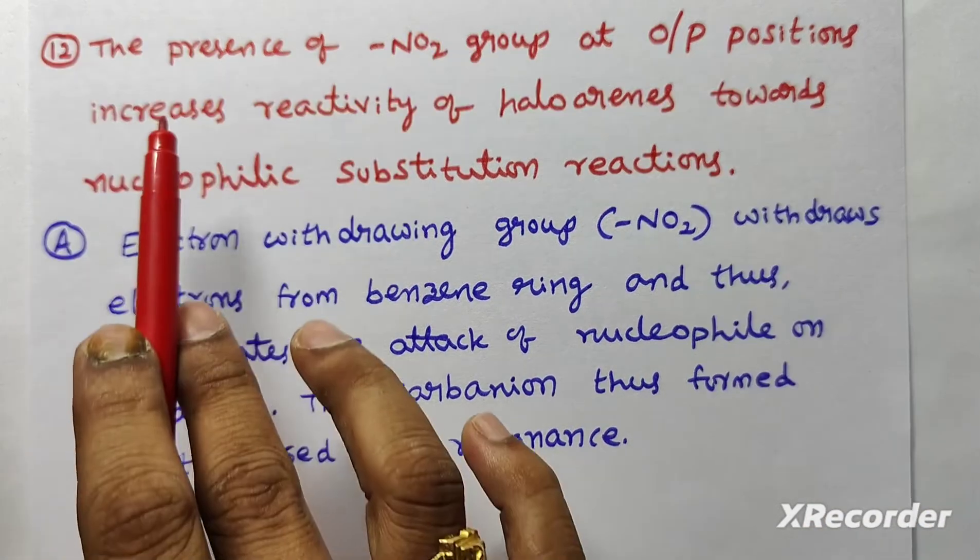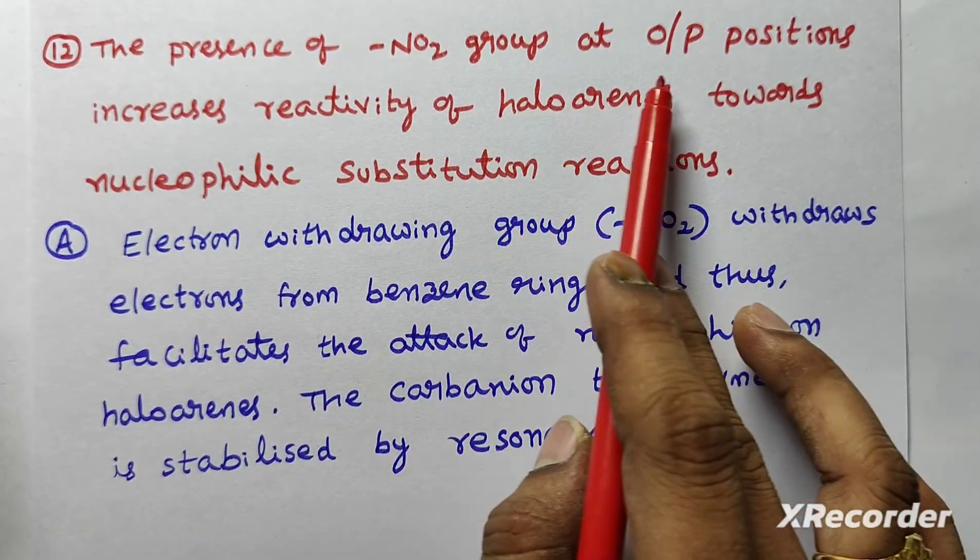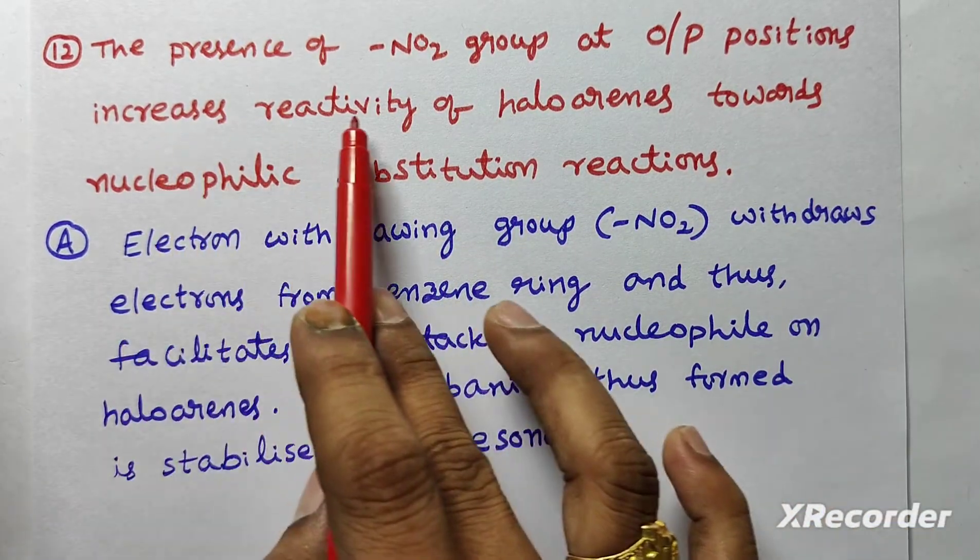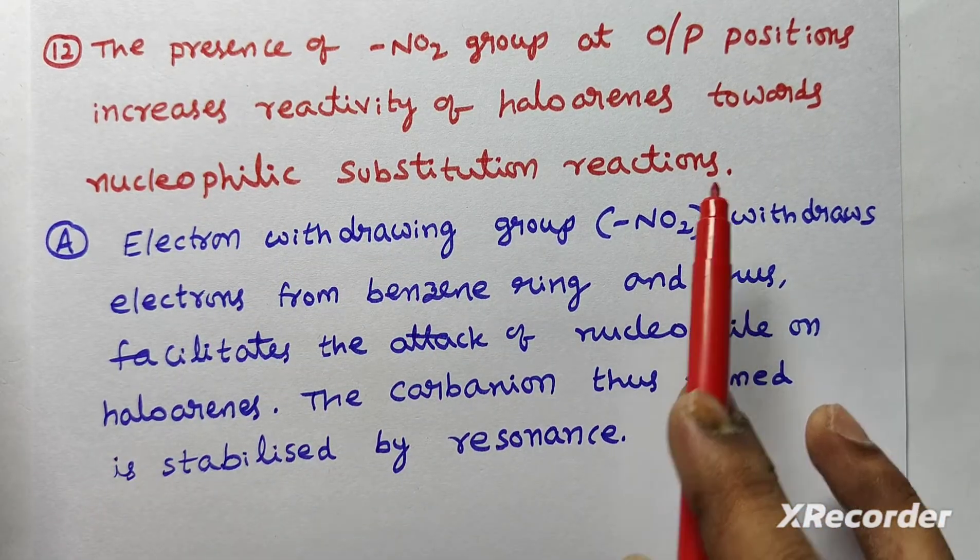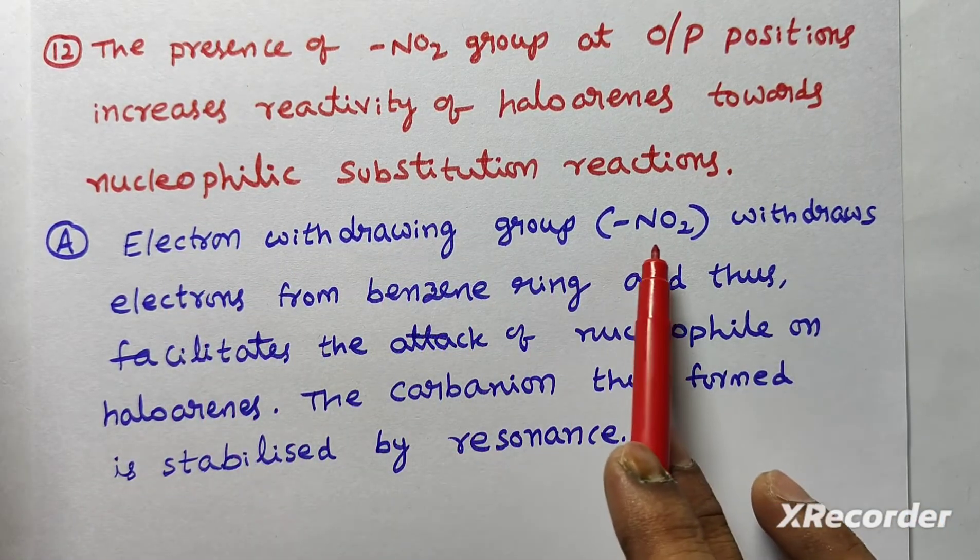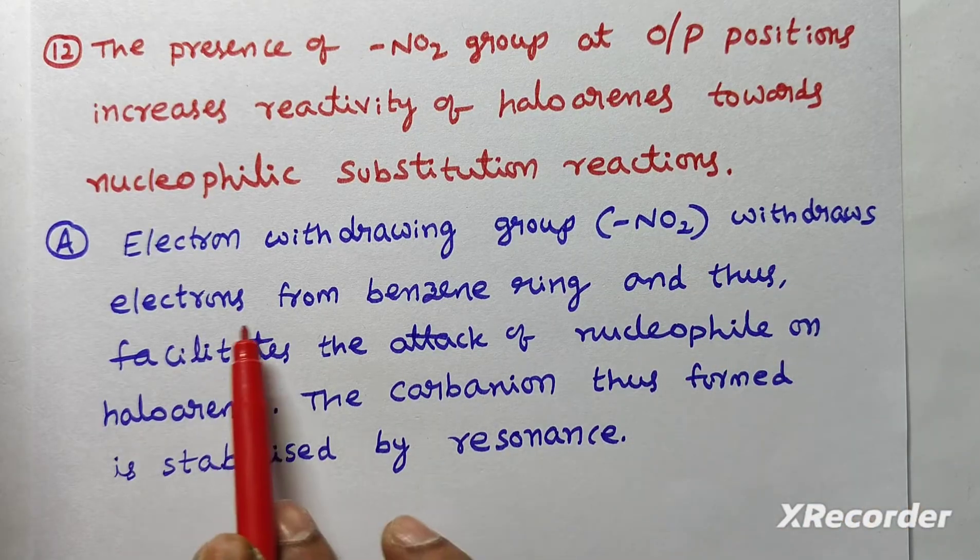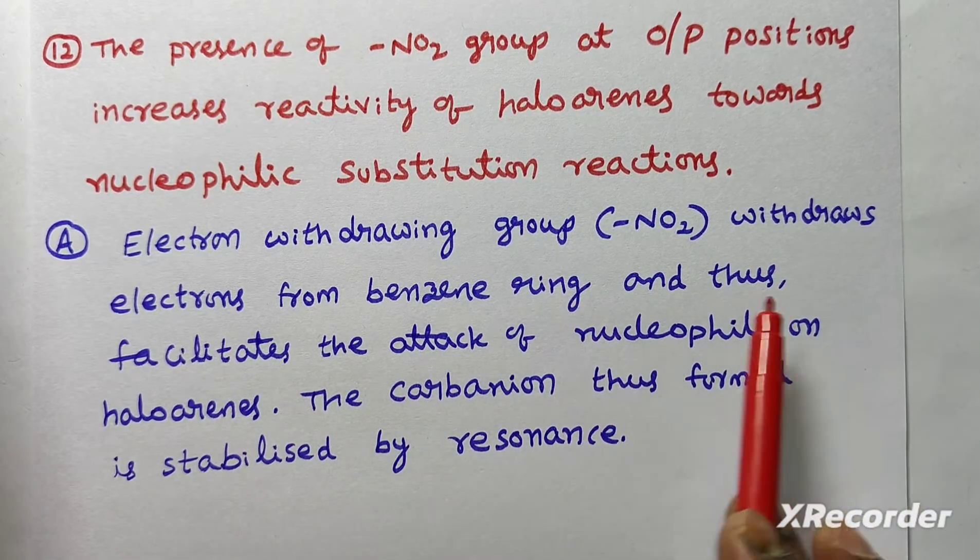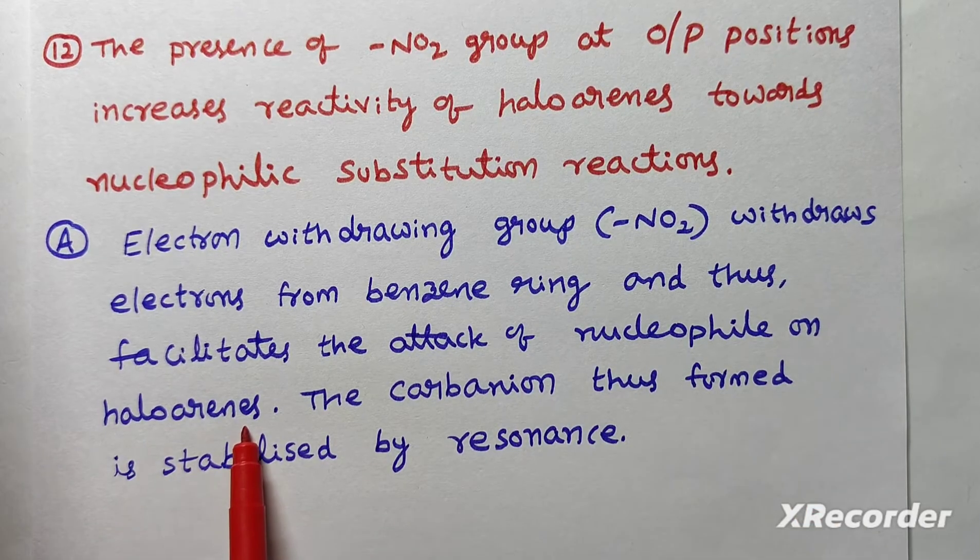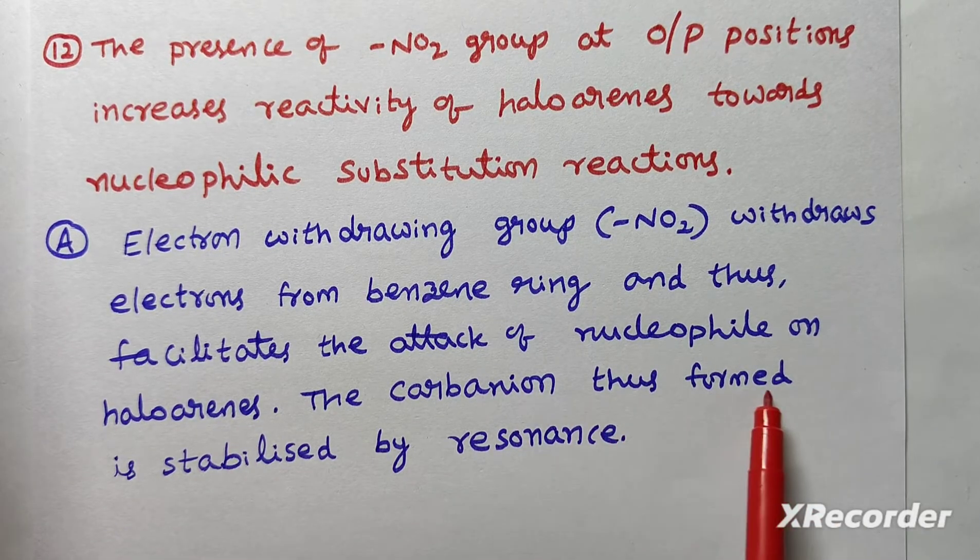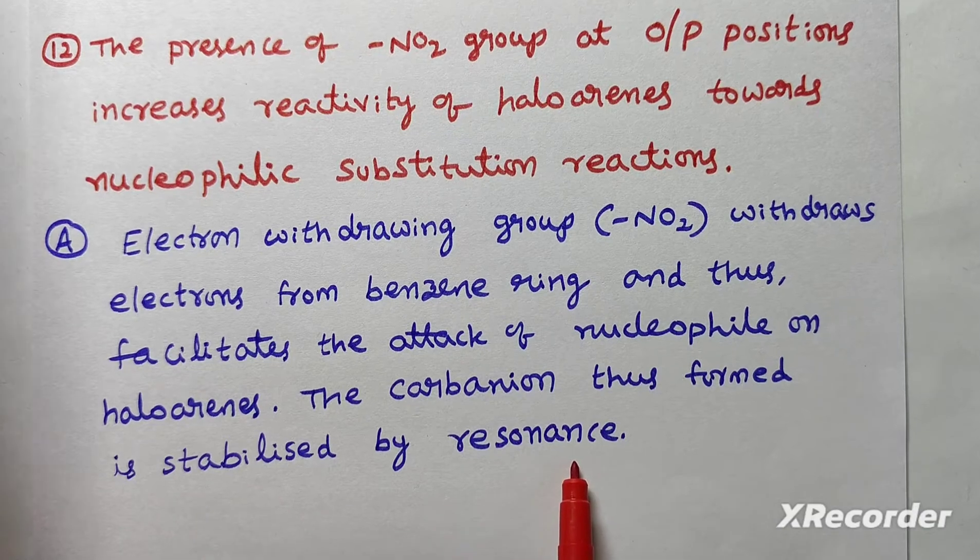Next question. The presence of NO2 group at ortho or para positions increases reactivity of halobenzene towards nucleophilic substitution reactions. Reason: Electron withdrawing group NO2 withdraws electrons from the benzene ring and thus facilitates the attack of nucleophile on halobenzene. And the carbocation thus formed is stabilized by resonance also.